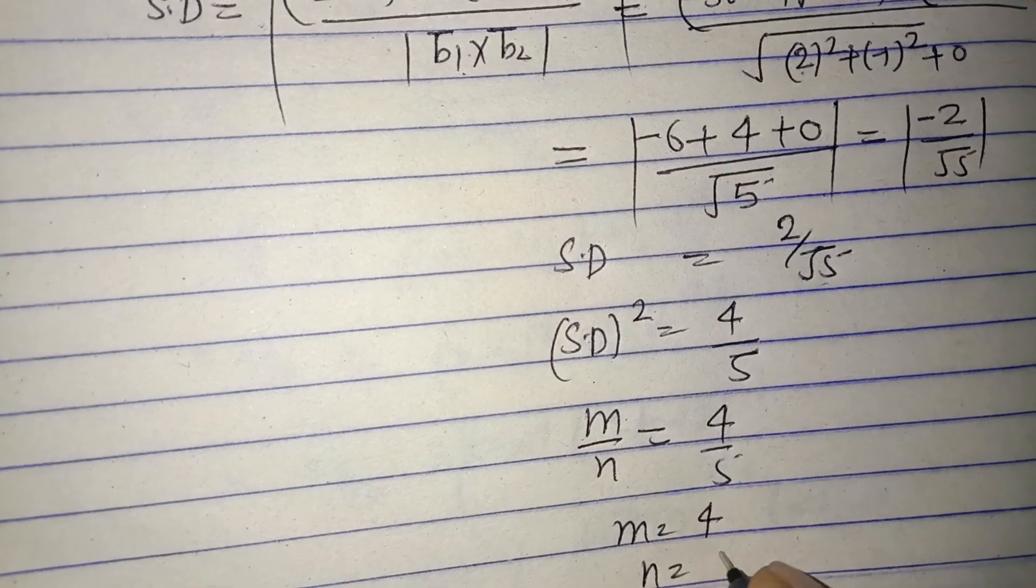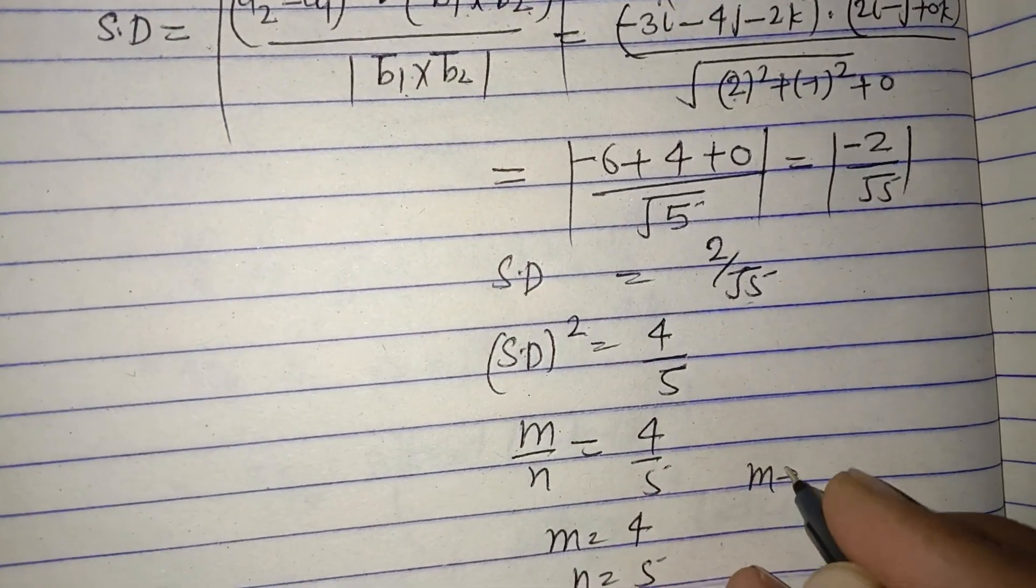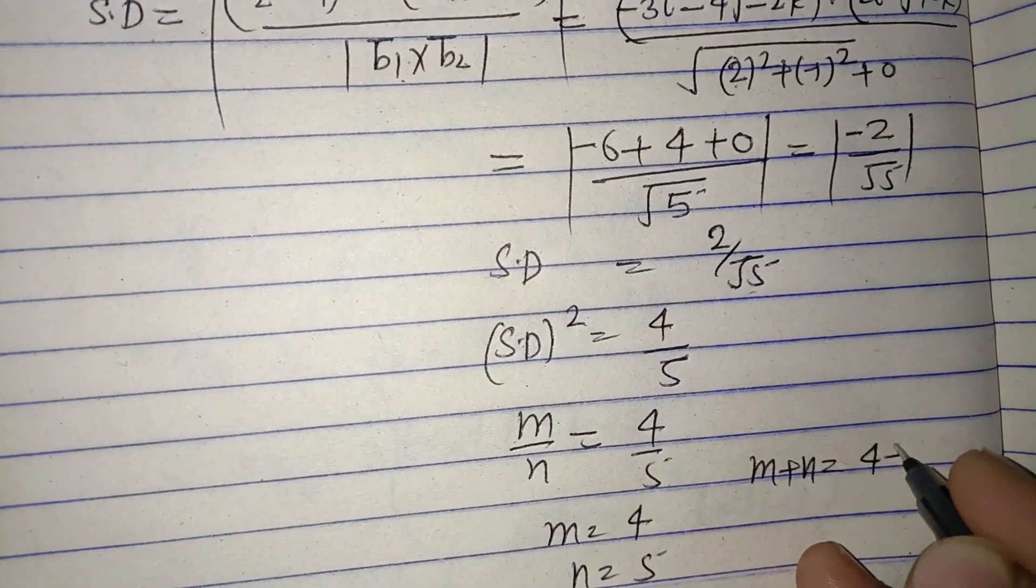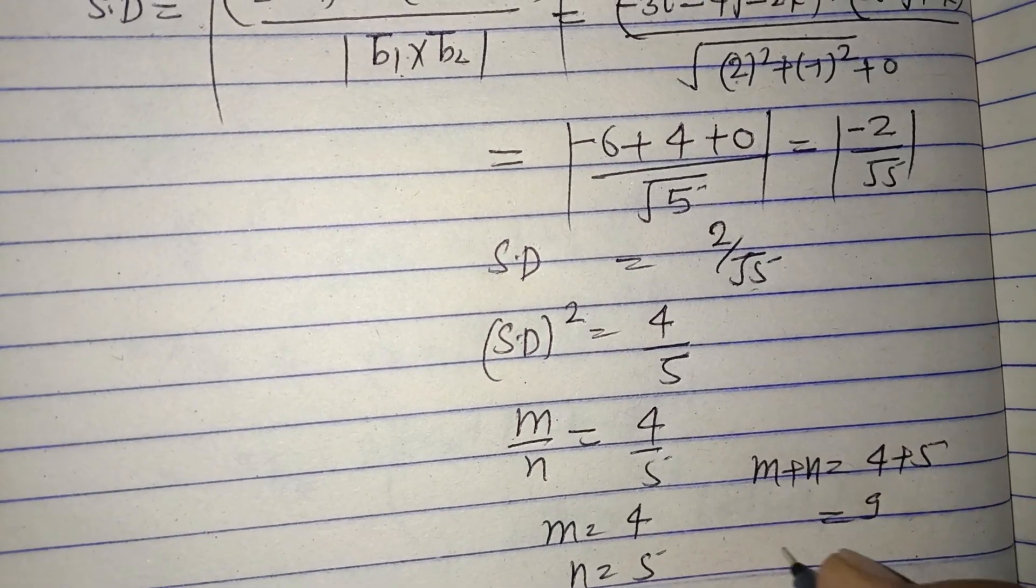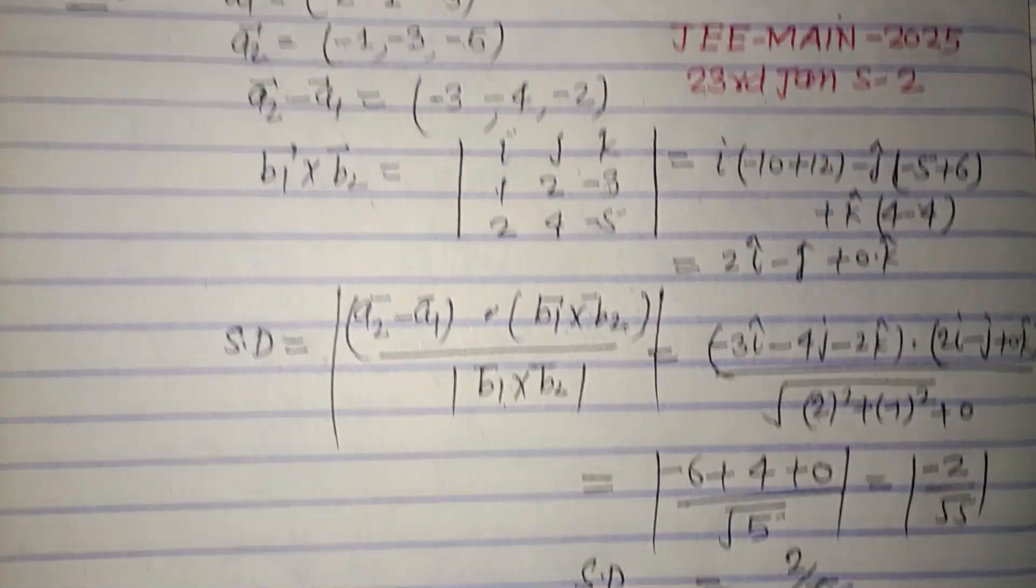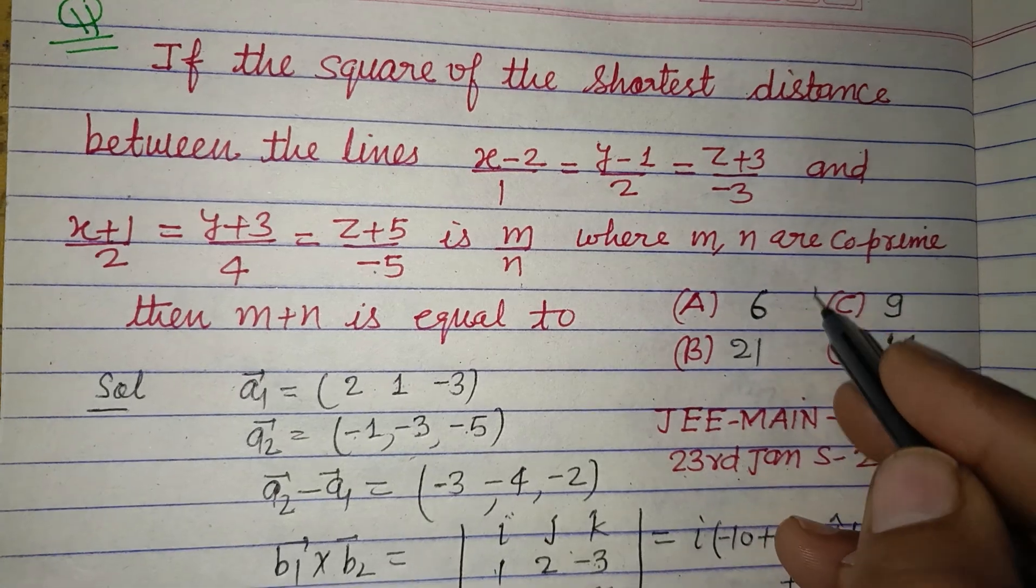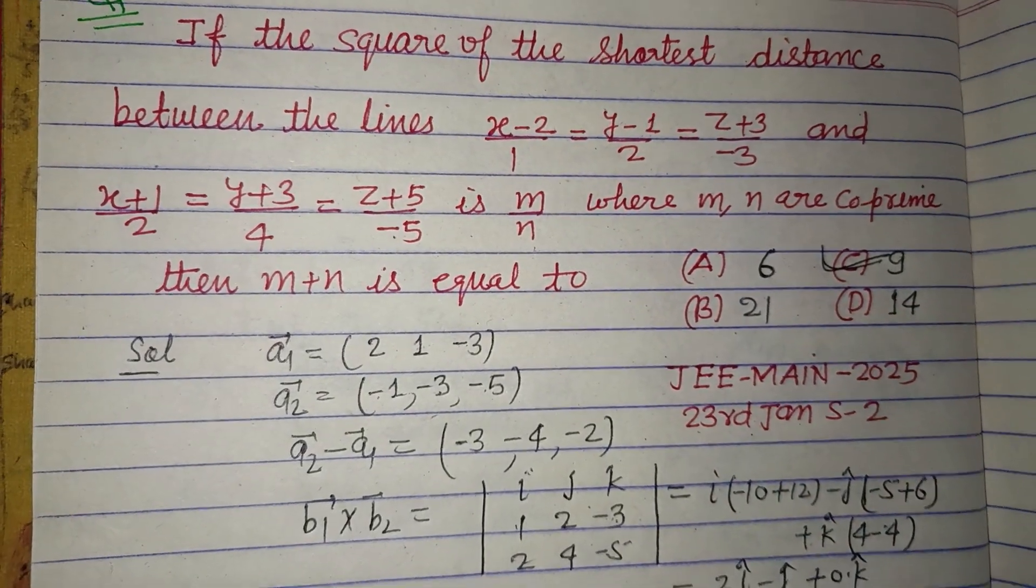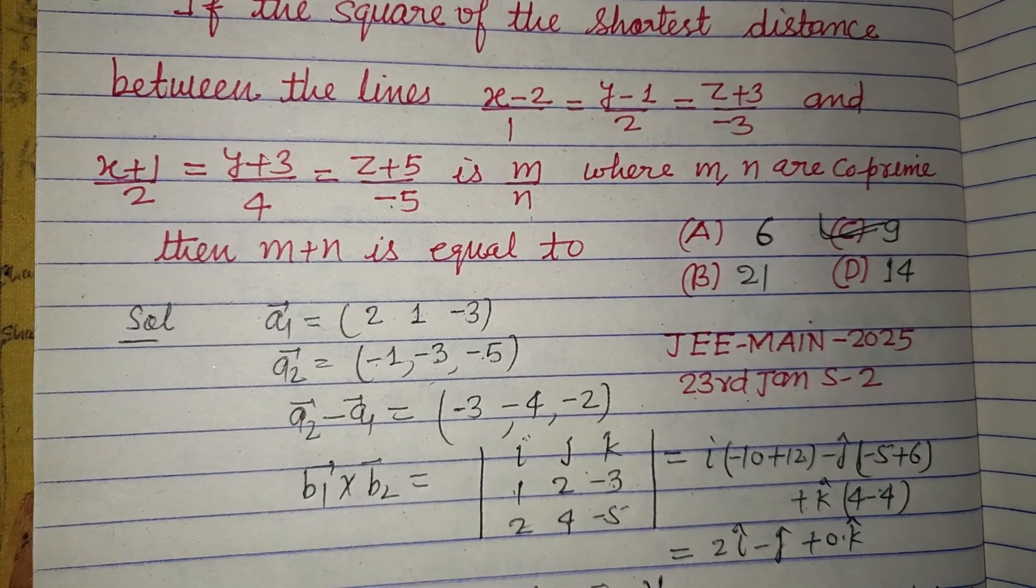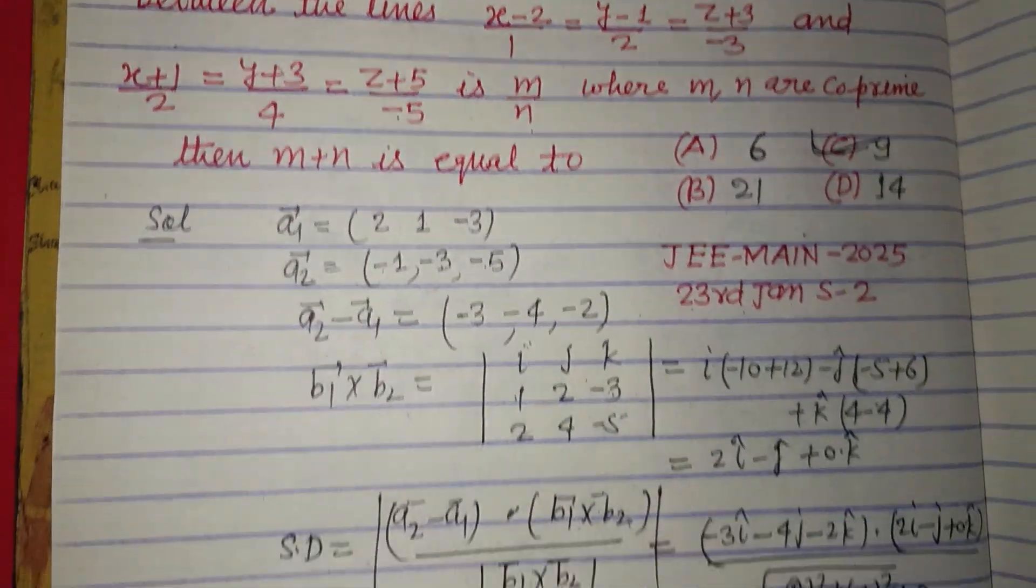From here, m is 4 and n is 5. Therefore, m plus n is 4 plus 5, which equals 9. So the value of m plus n is 9, which is found in option C. Option C is correct. I hope you got it. Please like the video, subscribe to the channel, thanks for watching.